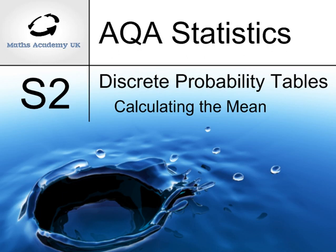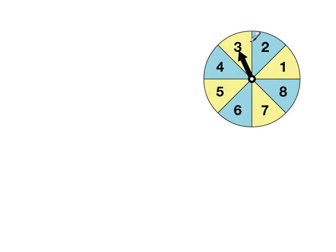Discrete probability tables calculating the mean. We have an eight-sided spinner. The number the arrow lands on is the amount of money you will win. So in this example, the arrow is on three, so you win three pounds. There is a certain probability that the arrow will land on any one of these numbers.